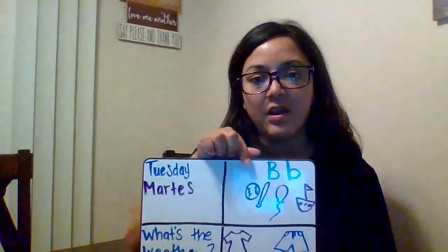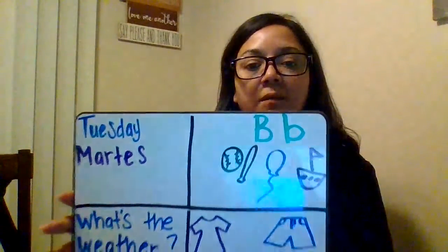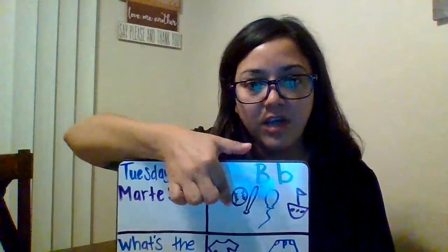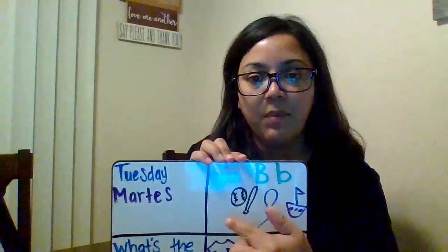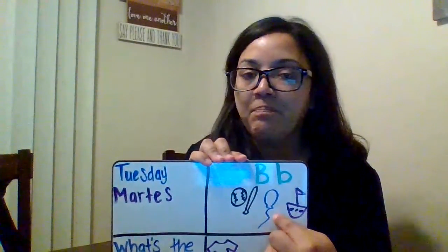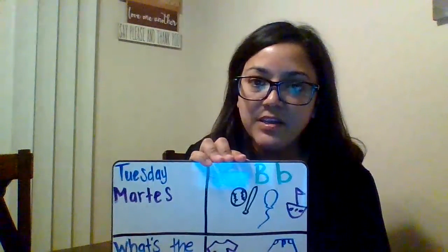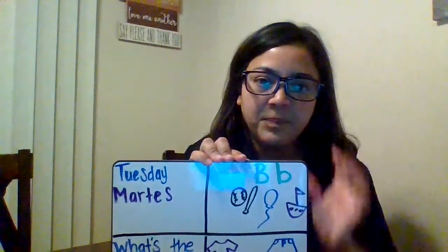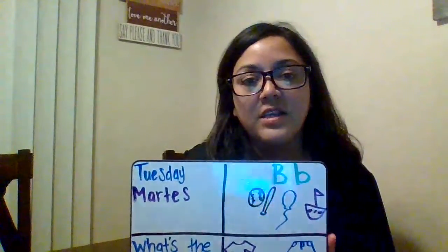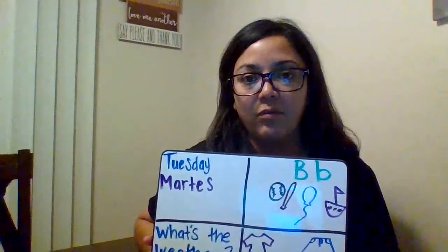Friends, last week we were talking about the letter A. Now this week we're talking about the letter B. I drew some pictures of things that start with the letter B. Can you tell me what those are? You have a ball, a bat, a balloon, and a boat. Can you think of other things that start with the letter B? We're gonna post some activities on Learning Genie to help you recognize the letter B and other things that might start with the letter B as well.